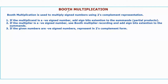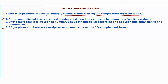Hello guys, today we are going to discuss about Booth Multiplication. Booth Multiplication is used to multiply signed numbers using two's complement representation. To perform Booth Multiplication, we have to follow these conditions. The first condition is: if the multiplicand is a negative signed number, add the sign bit extension to the summands, also called partial products, towards the left side. The second condition is: if the multiplier is a negative signed number, use Booth Multiplier Recording to modify the multiplier bits and add sign bit extension to the summands. The third condition is: if the given numbers are negative signed numbers, represent them in two's complement form. Now let us see how many combinations of multiplications are possible with different signed numbers.